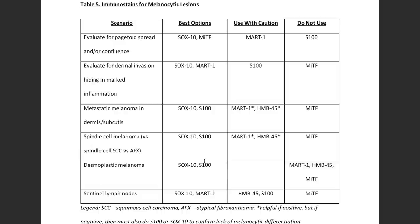Desmoplastic melanomas — and I'll do a whole video about desmoplastic and spindle cell melanomas in the future — are almost always positive for Sox10 and S100, but almost always negative for all other melanocytic markers: Mart1, HMB45, nothing else is going to help you there. S100 and Sox10 are your go-to stains for desmoplastic melanoma, along with the H&E pattern and clinical scenario, which are the most important clues. For sentinel lymph nodes, the stains I prefer most are Sox10 and Mart1 because they're crisp, clean, and very sensitive as well as specific in that setting.